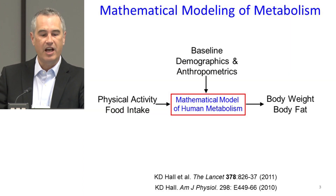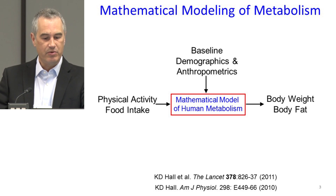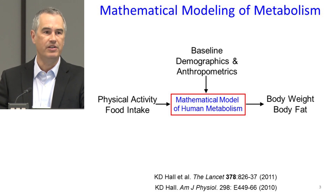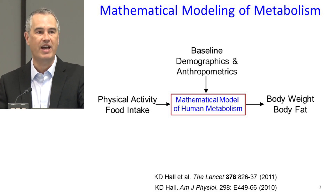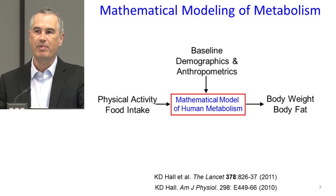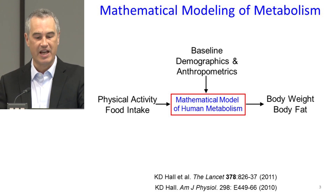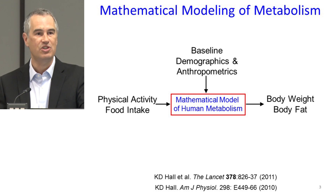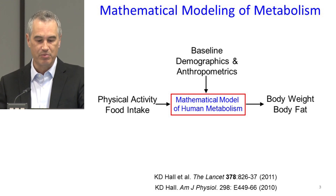The basic idea when I started my lab at the NIH was we have this vast swath of data where people have done controlled feeding experiments, where people went to metabolic wards and had diets manipulated in terms of carbohydrate, fat, and protein content as well as energy content, and changing physical activity. We know a lot about how the body adapts in terms of energy expenditure and changes in body fat and fat-free mass. What would be nice is to integrate all of that data by building a mechanistic mathematical model of how the body is responding to these changes, and we've done that in a couple of different papers.